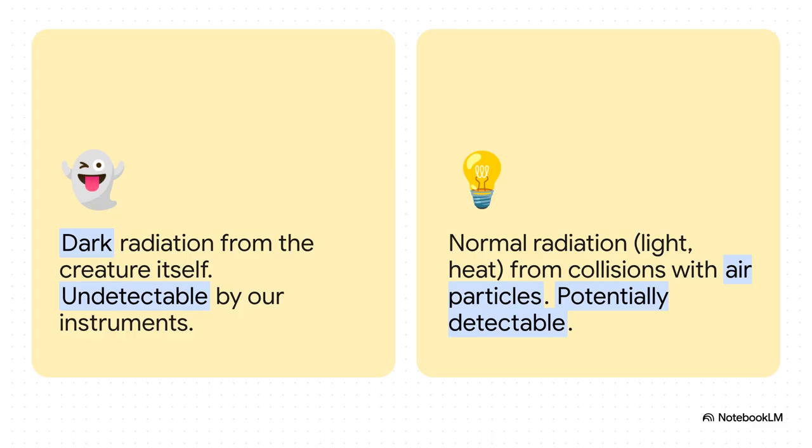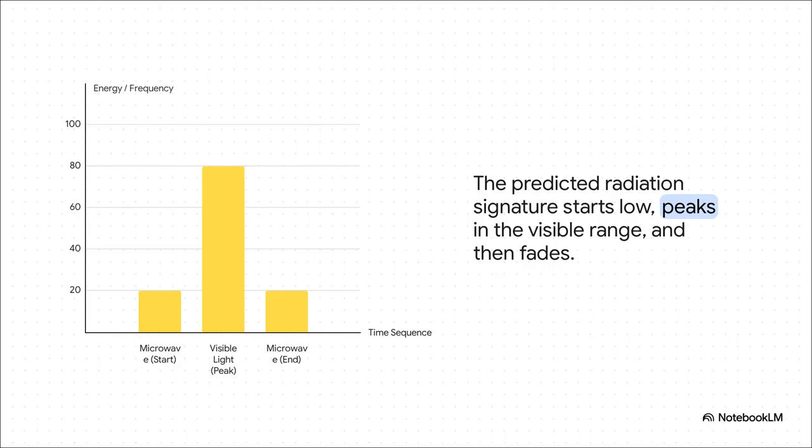So it's like, you can't see the invisible boat, but you can see the wake it leaves in the water. And this leads to a really specific, testable prediction. The theory says that as one of these plasma beings powers up, the radiation it kicks off in our atmosphere would actually rise in frequency. So it might start off as a faint microwave glow, then ramp up into the visible spectrum, something our cameras could see. And then as it powers down, it would fade back into a microwave afterglow. That's a very specific energy signature you could actually go out and look for.